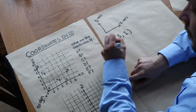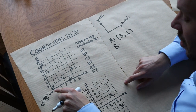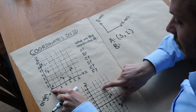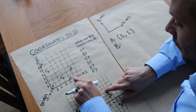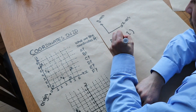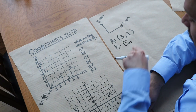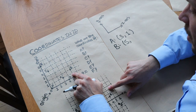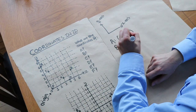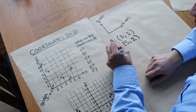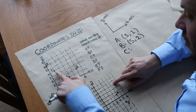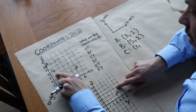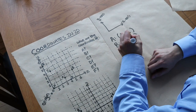What about B? We start at the origin and go five positions across in the x-direction, comma, then two up in the y-direction — so B is (5, 2). What about C? C is up here: we go one across, and then four in the y-direction, so C is (1, 4).